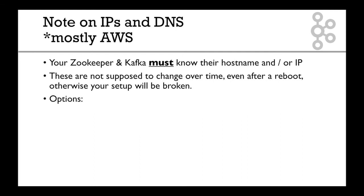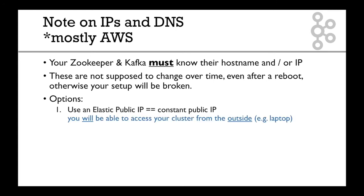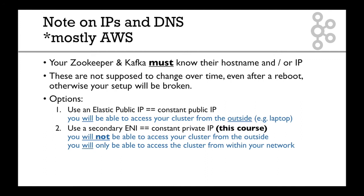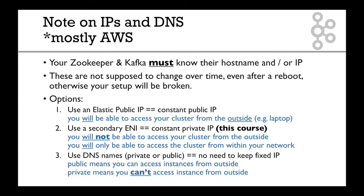You have several options because in the cloud, when you reboot a machine, you get some problems. You can use an Elastic IP as a constant public IP, but the problem is that your cluster will be accessible from the outside, which may be a problem. You can use a secondary ENI as a constant private IP, and we'll use constant private IP in this course. If you want the most sophisticated solution, you can use a DNS name — private or public — and remap the DNS to whatever machine you have. In this course, we're going to use option two, but if you have access to option one or three, feel free to use those after this course.